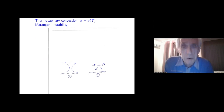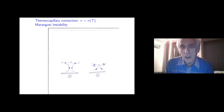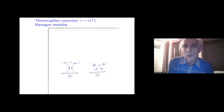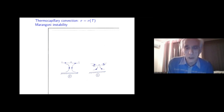A quite natural way to create inhomogeneity of the surface tension across the surface is just heating, because the surface tension depends on temperature. But even if you have a layer heating from below in a homogeneous, uniform case, there could be a state without motion — yet motion can still appear due to the instability, which is called Marangoni instability.